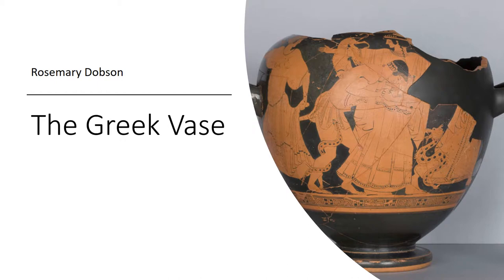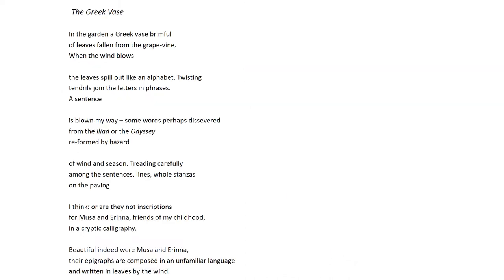Hi again Year 12s, we are getting through them now. So we're up to 'The Greek Vase' by Rosemary Dobson. Let's get straight into it. As usual we'll do a read through from start to finish before analyzing stanza by stanza. So here we go.